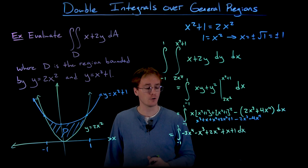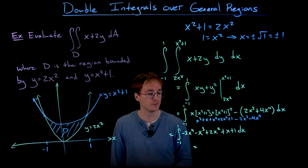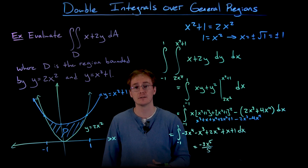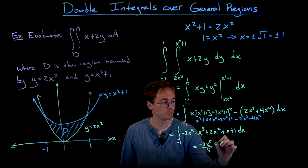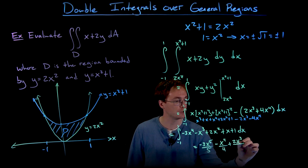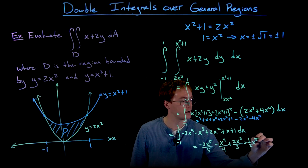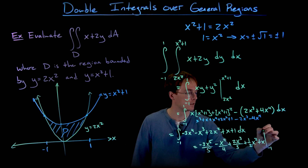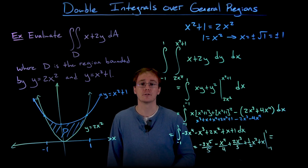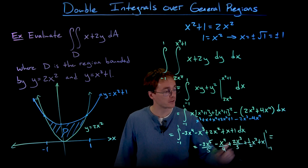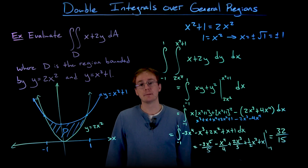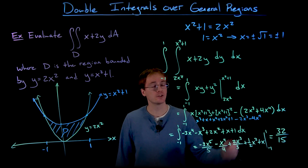We now evaluate the single-variable integral from negative 1 to 1 of negative 3x to the fourth minus x cubed plus 2x squared plus x plus 1 with respect to x. The anti-derivative is negative 3x to the fifth over 5 minus x to the fourth over 4 plus 2x cubed over 3 plus one half x squared plus x. Evaluating at 1 and negative 1 and taking the difference gives a final answer of 32 over 15.